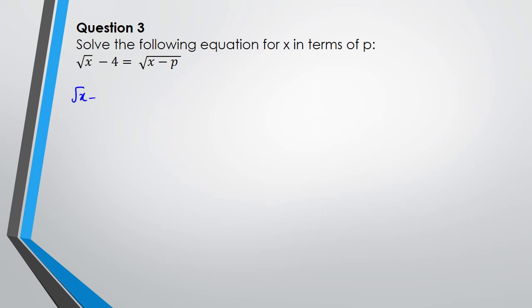So √(x - 4) squared equals √(x - p) squared. When I do this, I end up with √x - 4 times √x - 4 equals x - p.